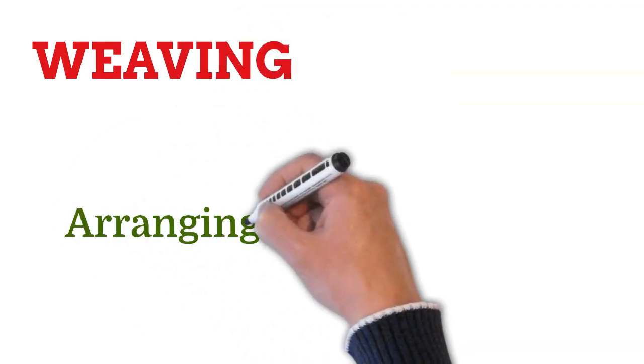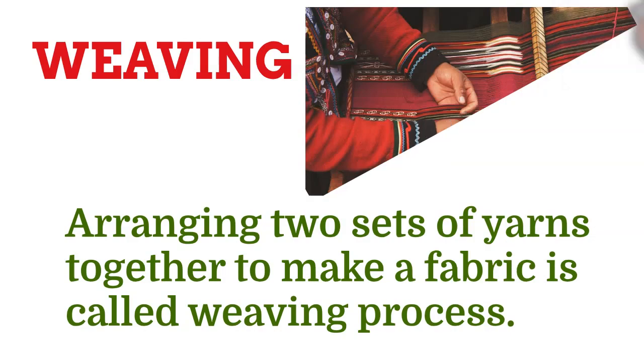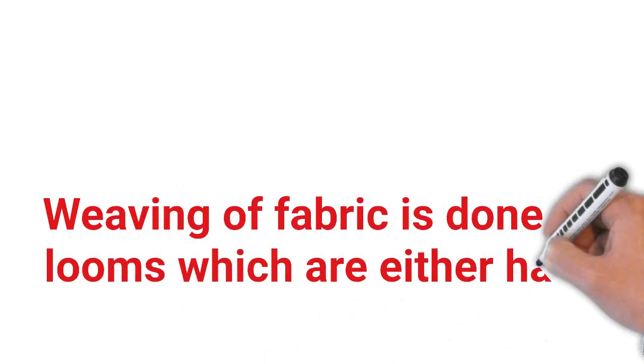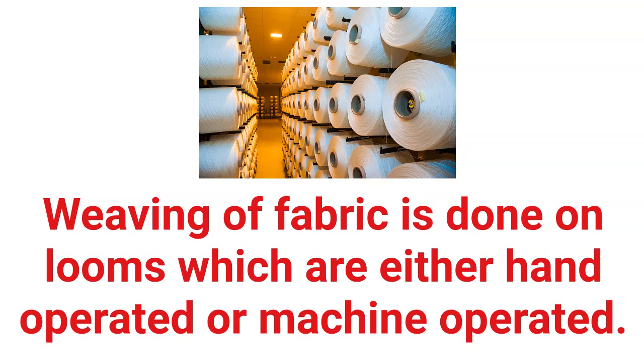Weaving. Arranging two sets of yarns together to make a fabric is called weaving process. Weaving of fabric is done on looms, which are either hand operated or machine operated.